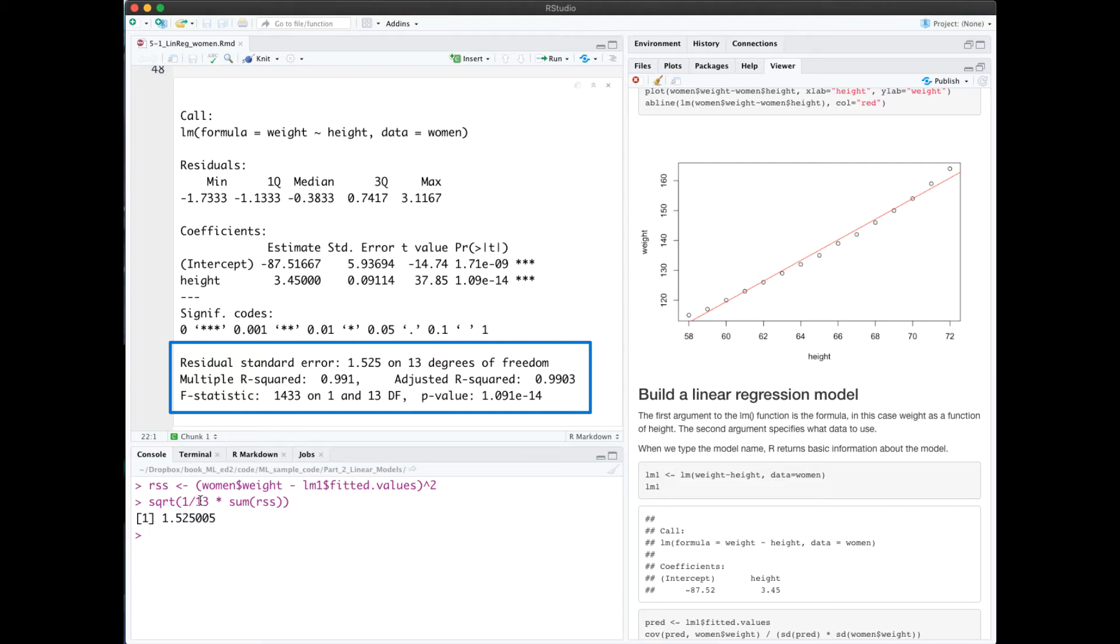So why is it scaled by 1 over 13? The data set had 15 rows, and we have two variables, so that gives us n minus 2, 13 degrees of freedom.